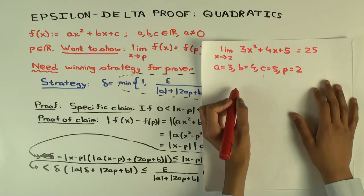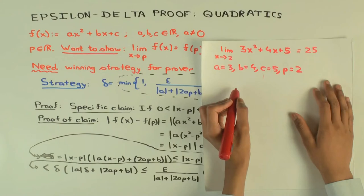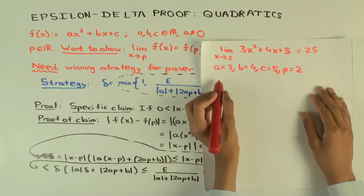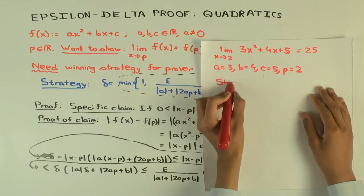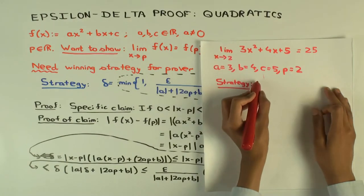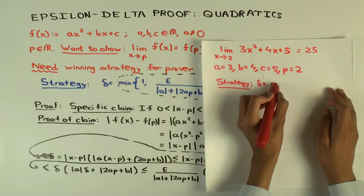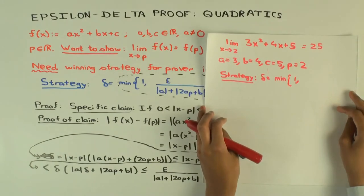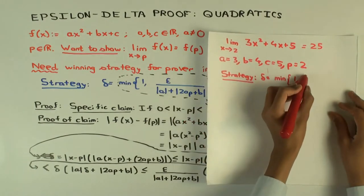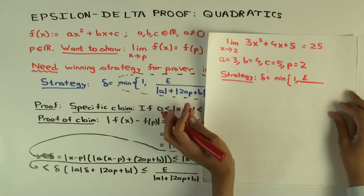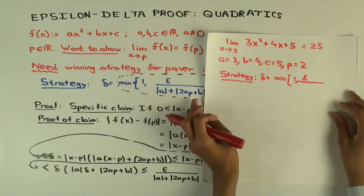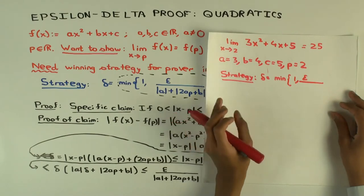Okay good, so what should the strategy be? You would have to exhibit a winning strategy and then show something, right? We will exhibit what delta is. Delta is minimum of one and epsilon over—do it with me or you just want one number? Well just say it loudly. Two times three times two times four plus four. So what's that? Two times three, twelve, fifteen, nineteen.